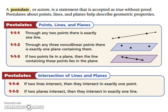The first postulate is, through any two points, there is exactly one line. So through any two points, you can only draw one line through them. You can't draw anything else.